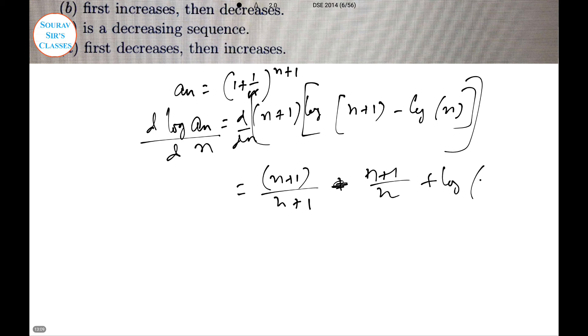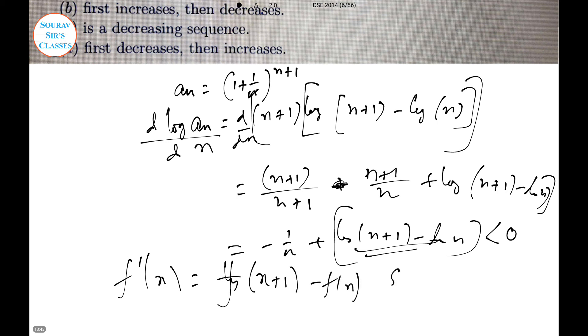We have to apply this derivative. The first part is done, then log of 1 plus 1 by n with the derivative portion. This is n plus 1 by n plus 1 minus 1 by n equals log n plus 1 minus log n minus 1 by n. This portion is less than 0 because log is a strictly concave function. The above inequality holds for f of x equals log x, and f of x plus 1 minus f of x is strictly concave formation.